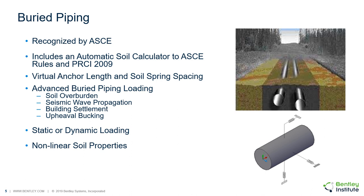Autopipe can handle modelling and analysis of buried piping systems with non-linear properties defined. The soil supporting a buried pipe may provide non-linear support, either softening or stiffening, as the load of the soil increases. For example, the final stiffness can be very low, which means the soil has yielded and provides no more resistance.